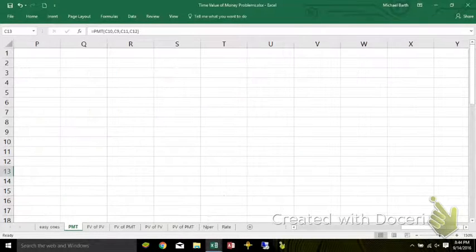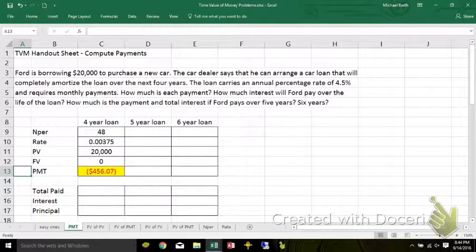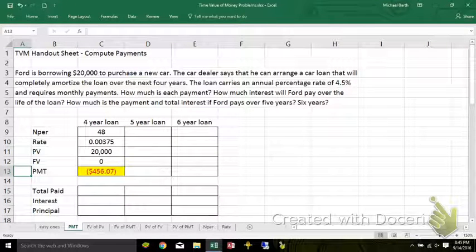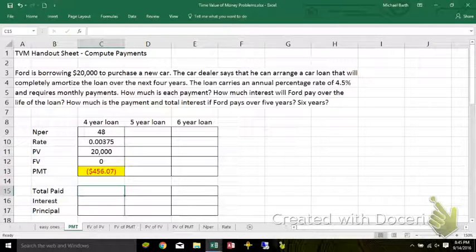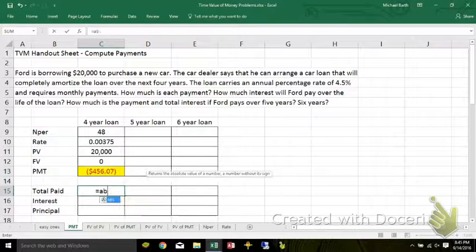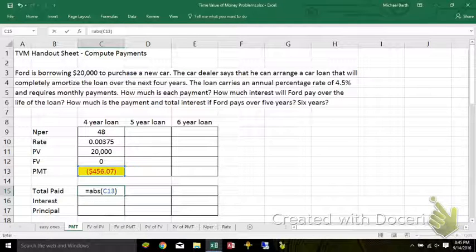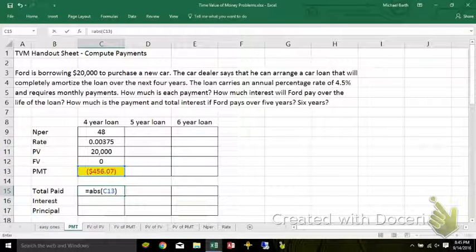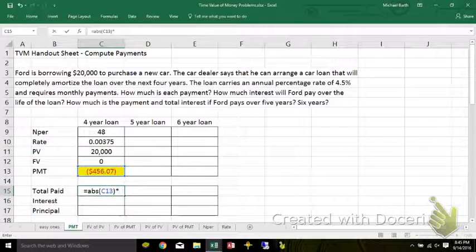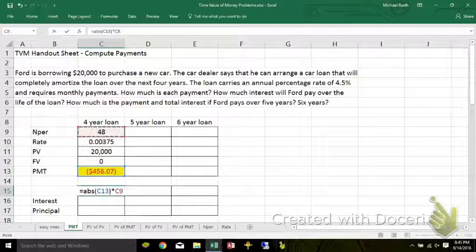All right, so the payments on that car would be $456.07. The total amount paid, if you took the absolute value, each of the payments will be $456.07, and you're going to make 48 of them.